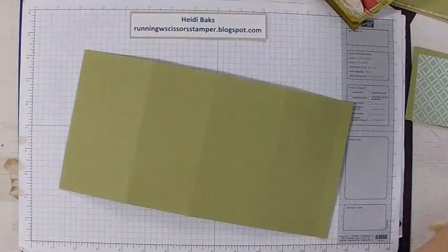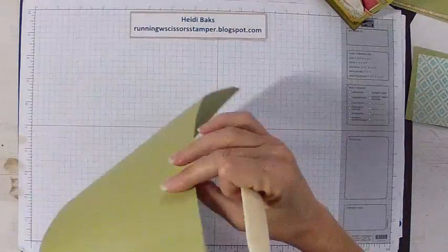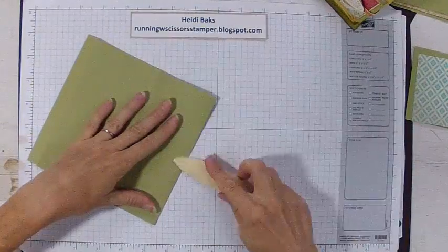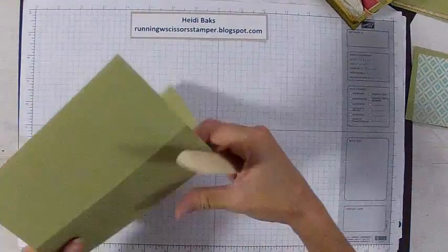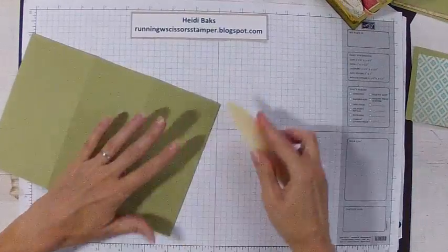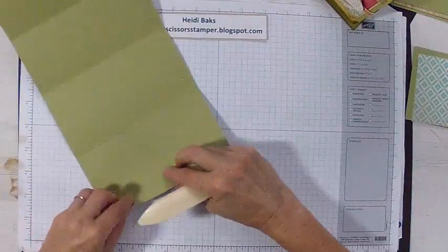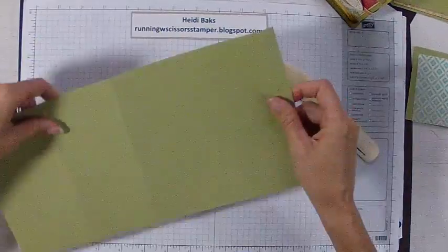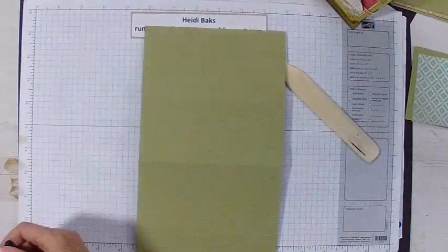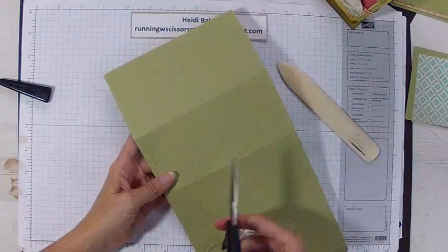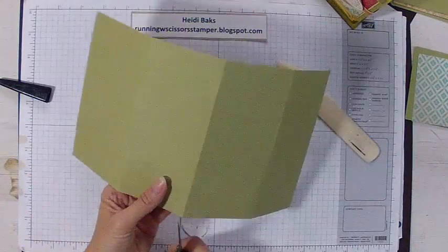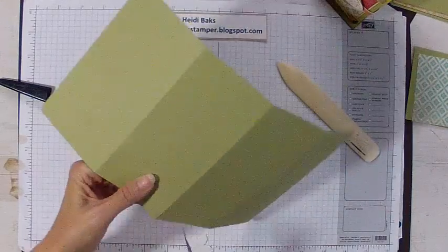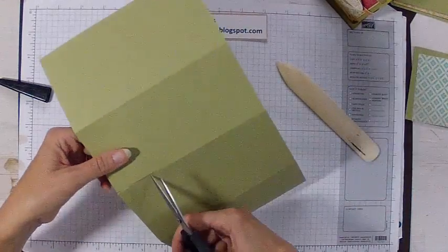Okay, I'm back. I forgot my bone folder and my scissors. So first, let me go ahead and score these, fold these edges really well. And then, I was saying, you're going to cut the one and three fourths inch section out of your base, just following the score lines.